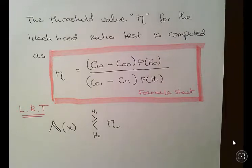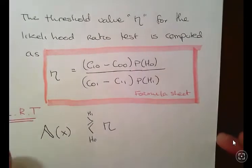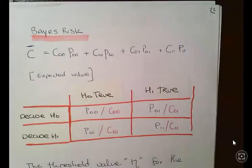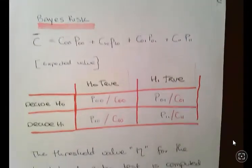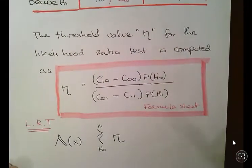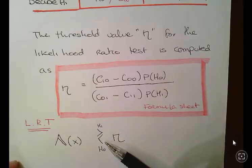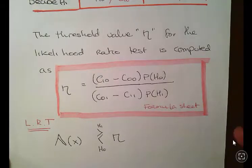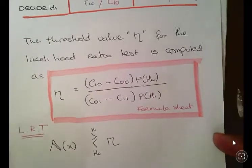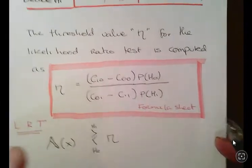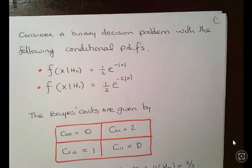And then what we do is we have a likelihood ratio that we compare to this threshold. So there's a couple of things you might want to follow up on beforehand: likelihood ratio test and maximum a priori test. This is decision theory type stuff.